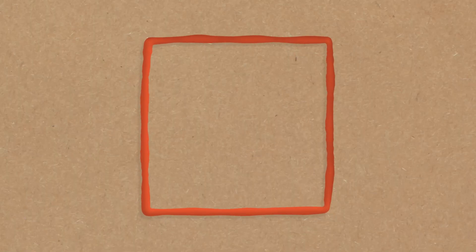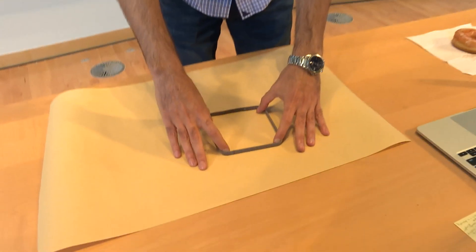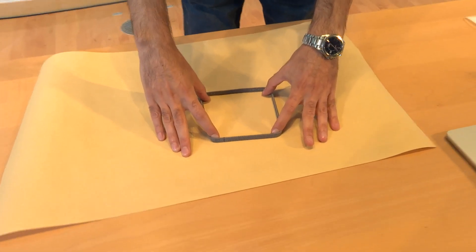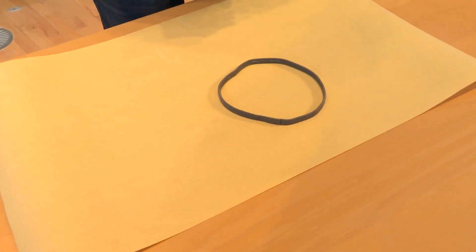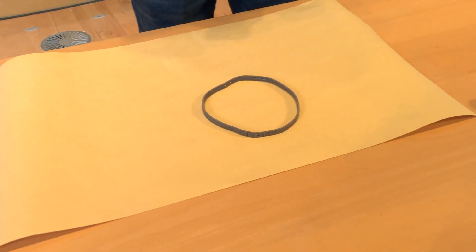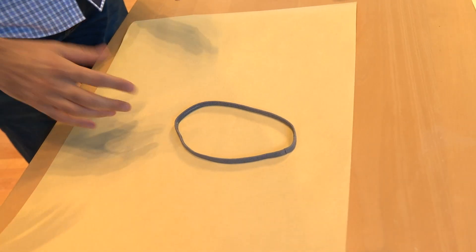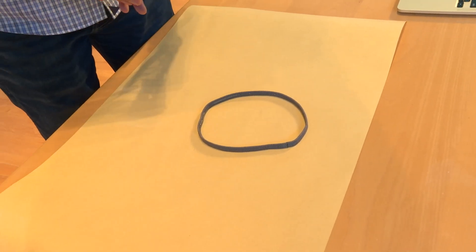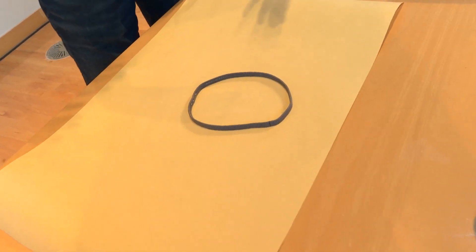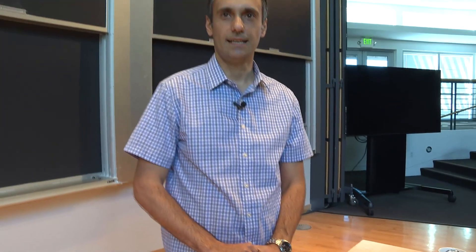So a square, for example, if we started manipulating that, it would very quickly not be a square anymore. We have a square right here and I could turn it into a circle, more or less, by just bending it. I could also turn it into a triangle. But what I cannot do is turn a circle into two circles — the only way to do this would be to break it and then glue it back, but that's not allowed.